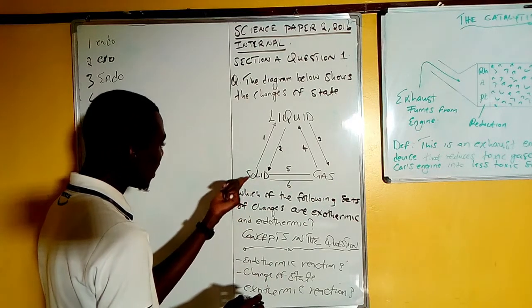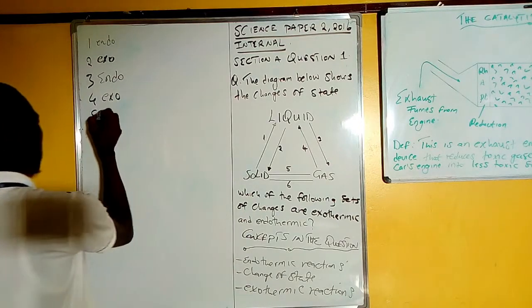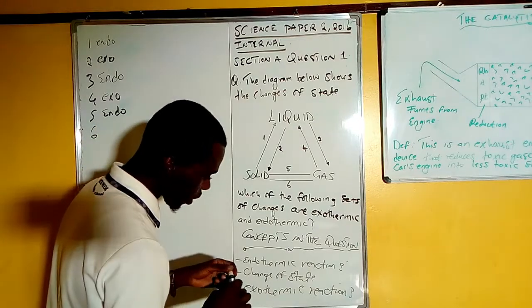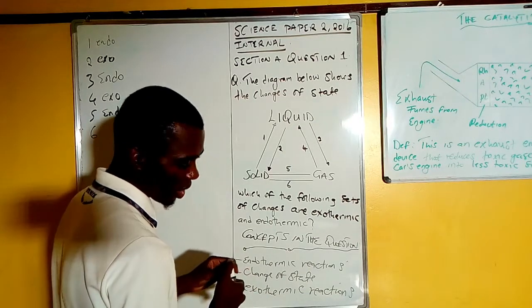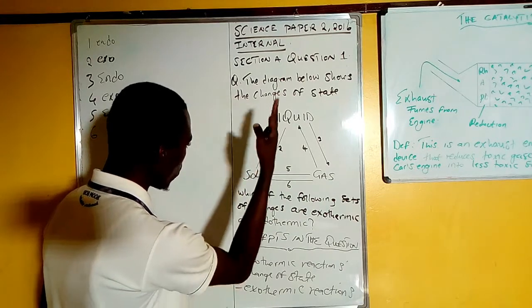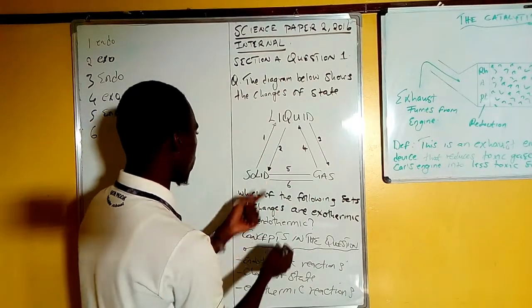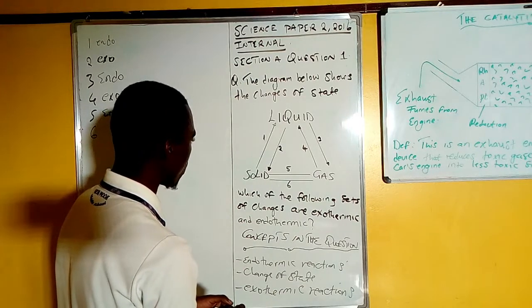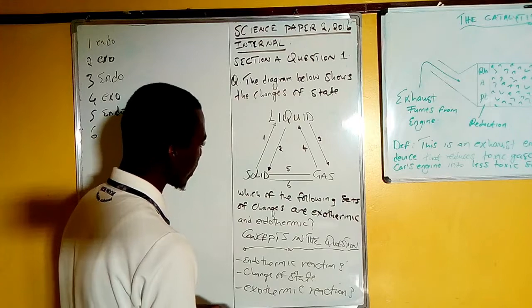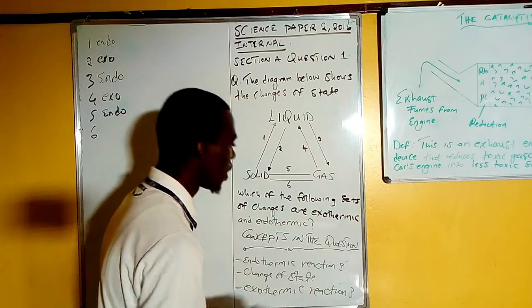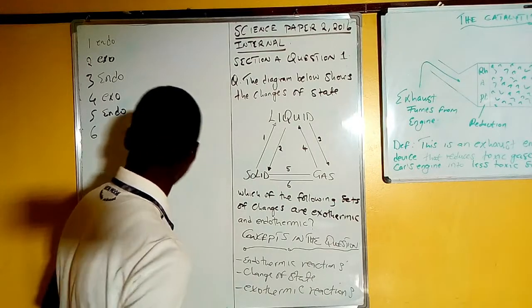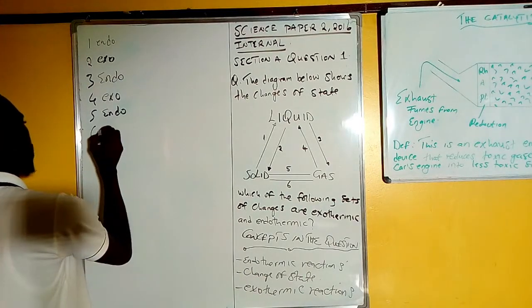Last but not least, number six: we have from gas to solid without turning into liquid first. Gas to solid, that is deposition. Deposition is when you are rapidly cooling a gas. So cooling a gas, it means the gas is producing heat, it's losing heat. A reaction in which heat is given to the surrounding is known as exothermic, so we're going to have an exothermic reaction.